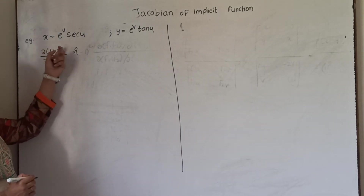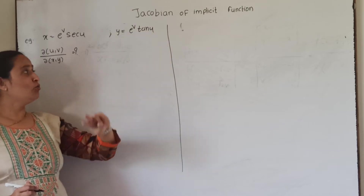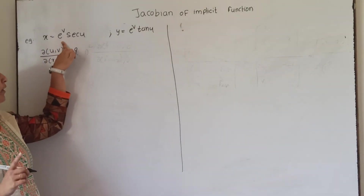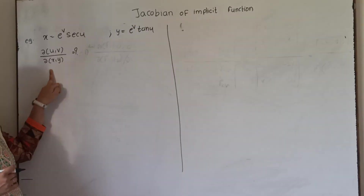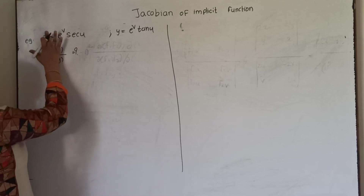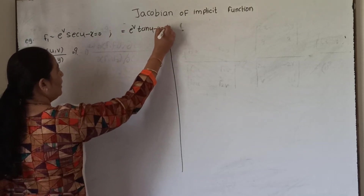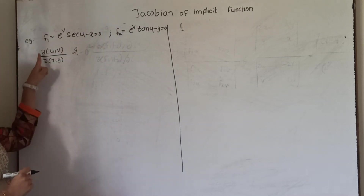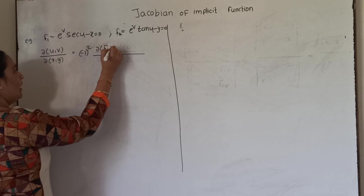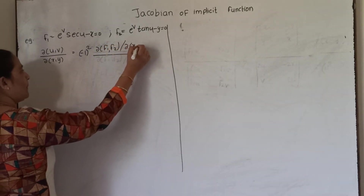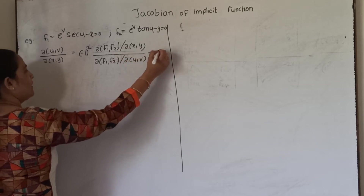Now we find the Jacobian of uv with respect to xy where x = eᵛ sec u and y = eᵛ tan u. We can use the Jacobian of implicit function approach. Transferring terms: f1 = eᵛ sec u − x = 0 and f2 = eᵛ tan u − y = 0. We have two functions, so we write minus 1 squared times Jacobian of f1, f2 with respect to xy upon Jacobian of f1, f2 with respect to uv. Call this equation 1.